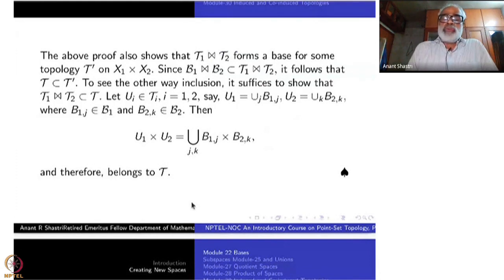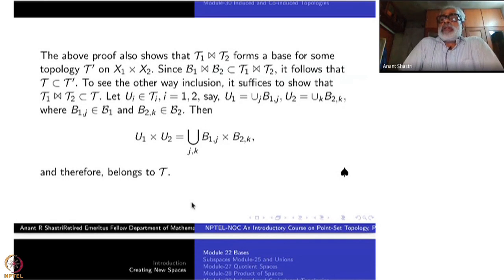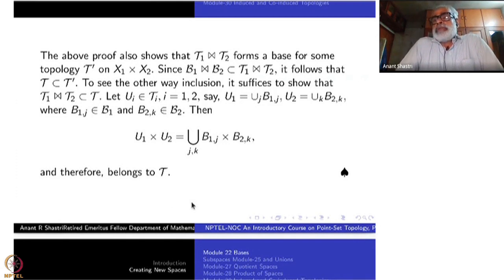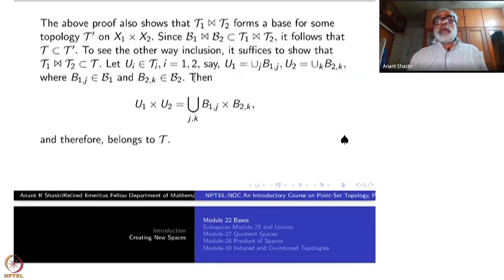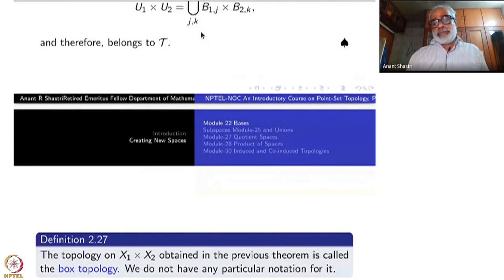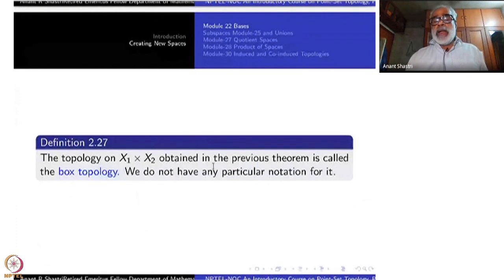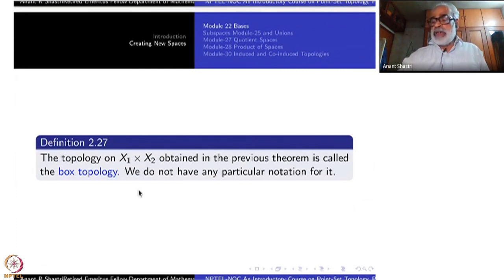So what we have proved is: if you fix bases for tau1 and tau2 and take the corresponding B1 join B2, you get a topology, and that topology is independent of what bases you have chosen. The topology on X1 cross X2 obtained this way is called the box topology. In dimension 3 it actually looks like a box, which is why it is called box topology.